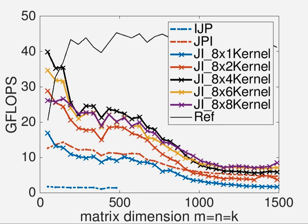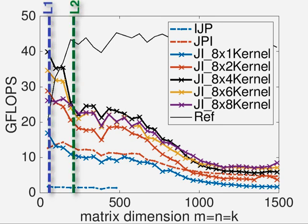In the last homework, you calculated the size of the largest square matrix that fits in the L1 cache, in the L2 cache, and the L3 cache. We show those sizes now on this graph.